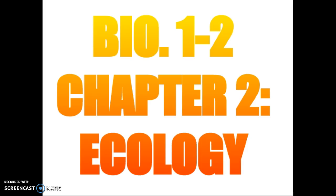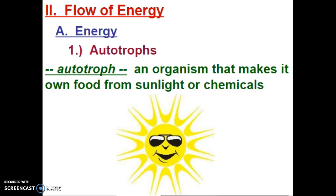This is Biology 2, Part 2 of Chapter 2 of Principles of Ecology. In this part of the video lecture, we will be taking a look at the flow of energy through an ecosystem, as well as identifying some of the players in food webs and food chains, and also taking a very brief look at how matter cycles through the ecosystem.